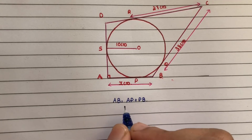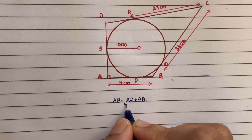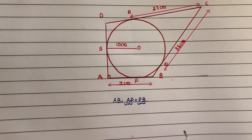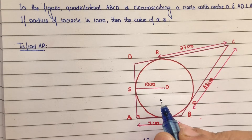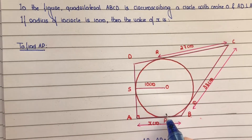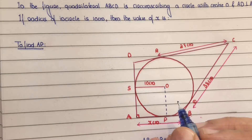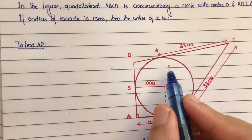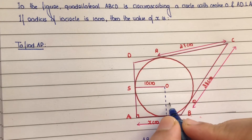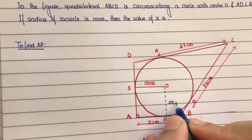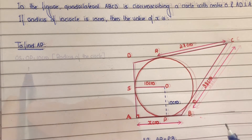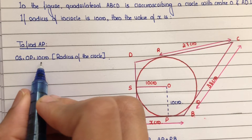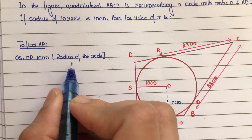The solution is divided into two parts. First part: find AP. Second part: find PB. First step — join O and P. OS and OP are radii of the circle. Therefore, OP length is 10 cm, and OS is equal to OP, equal to 10 cm. Reason: radius of the circle.